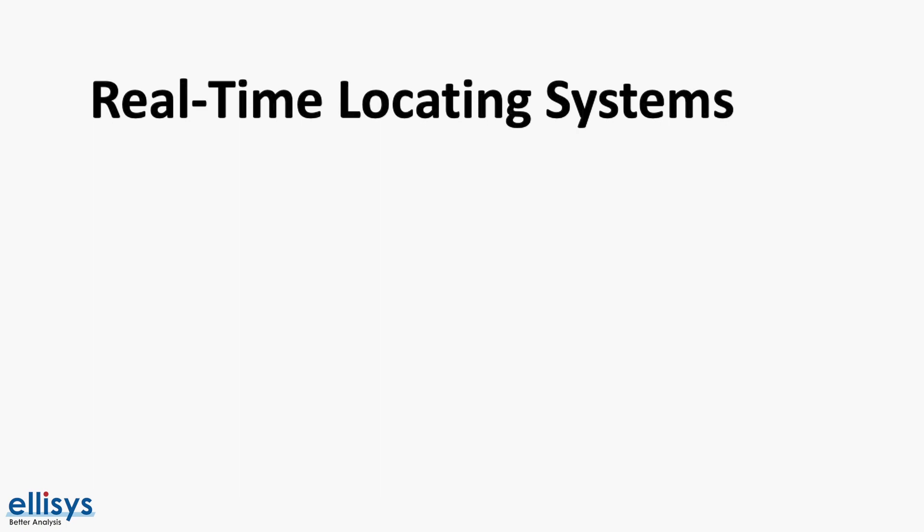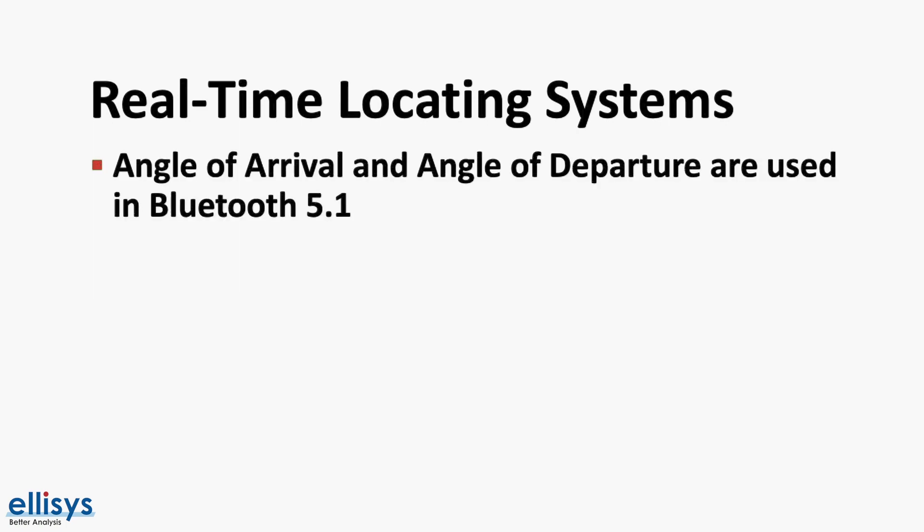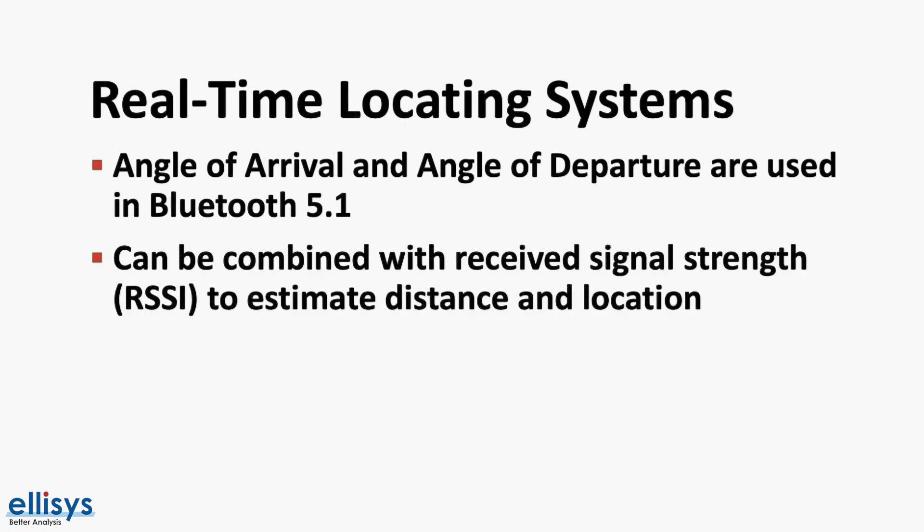As we mentioned earlier, Bluetooth 5.1 introduces two methods for use in Bluetooth systems: the angle of departure and angle of arrival. Combining these methods with RSSI can then estimate location and distance to a tracked device. Now let's talk about each of these methods in a bit more detail.